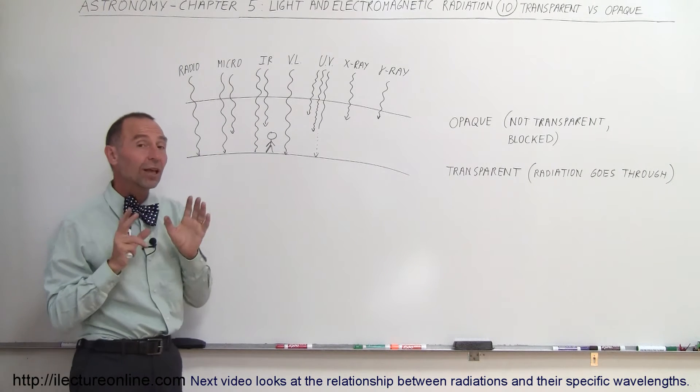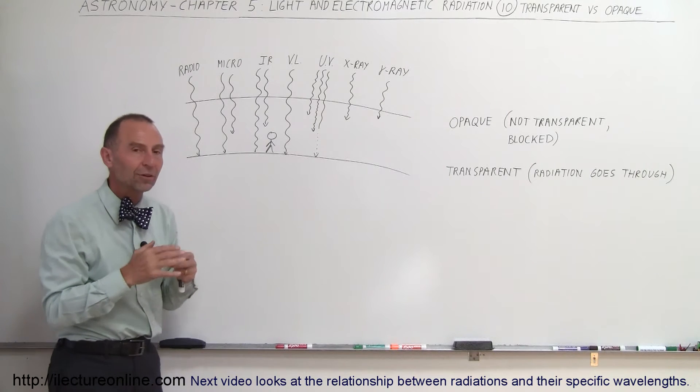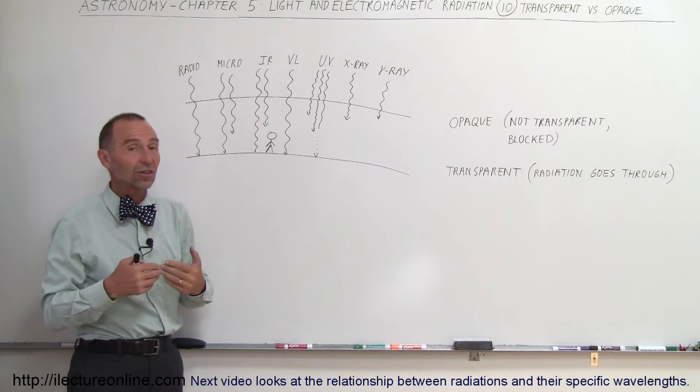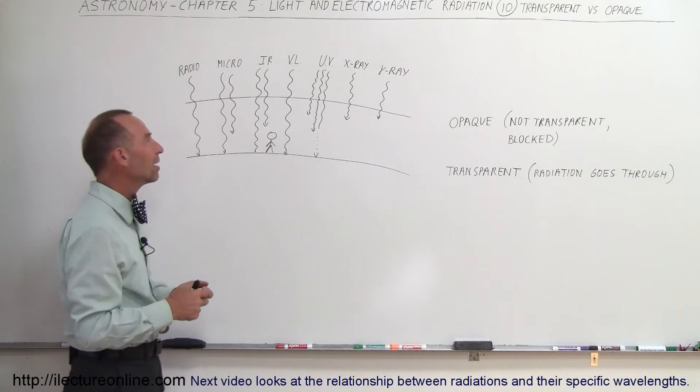But not all, some is blocked and does not make it through one way or the other. So you could say that the atmosphere is partially opaque to infrared radiation, or you could say it's opaque to some infrared radiation and it transmits other infrared radiation.